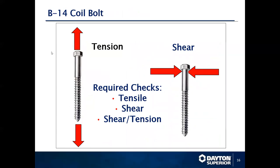When we talk about tension and shear: tension is when we are actually pulling the bolt in an upward motion, straight up. Shear is when force comes from the side — it will simply shear the top right off.